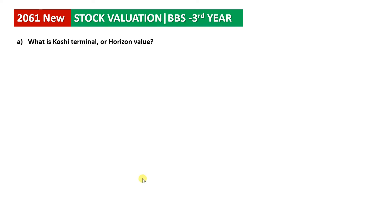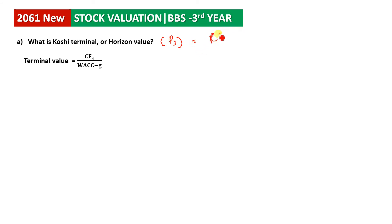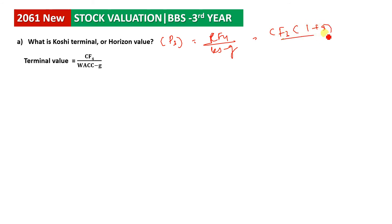The terminal value is constant at the end of 3 years. P3 is derived from the formula: cash flow 4 divided by KS minus G, where cash flow 4 is passed by KS minus G. KS 4 is passed by 3, multiplied by 1 plus G, divided by KS minus G.